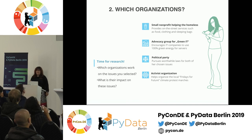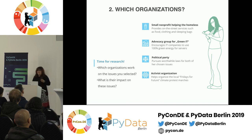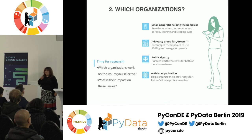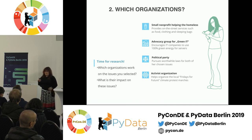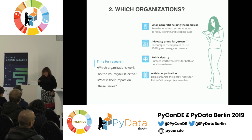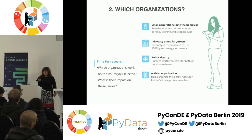Now that she knows which causes are important to her, the next question is: which organizations work on those causes? This is more of a research issue. You can obviously start with Google, but also conferences, asking people around — figure out who works on those issues and which organizations are effective. There are also organizations that monitor social sector organizations and give them ratings. Alina found four different organizations: a small nonprofit that helps the homeless, an advocacy group for green IT, a political party whose policies she likes, and an activist organization that organizes local Fridays for Future events in Berlin.